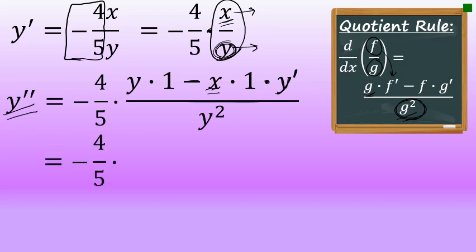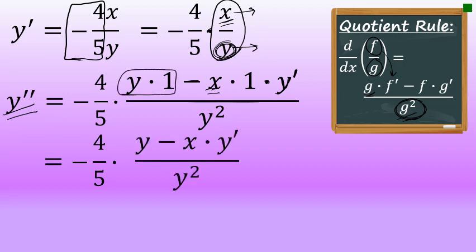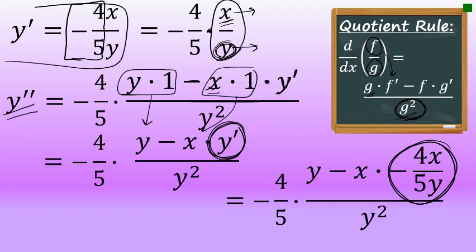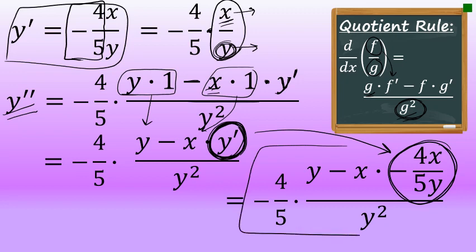The negative 4 fifths in the front remains unchanged. Cleaning things up: y times 1 is just y, and x times 1 is just x. I'm going to replace y prime with what we found the first derivative to be — negative 4x over 5y. So all I've done in this step is replaced y prime with negative 4x over 5y. We now have a complex fraction representing the second derivative, and I'll simplify next.